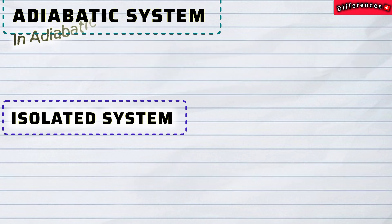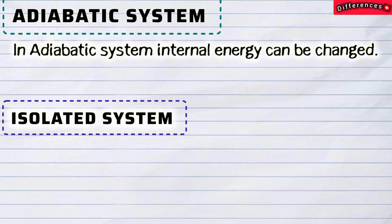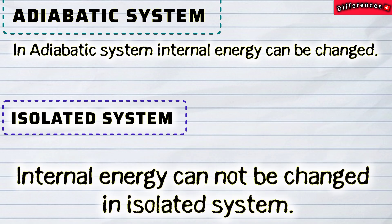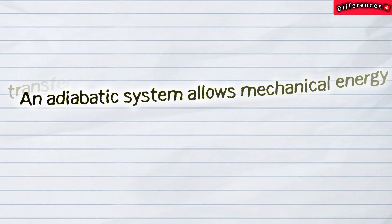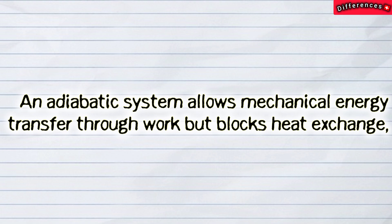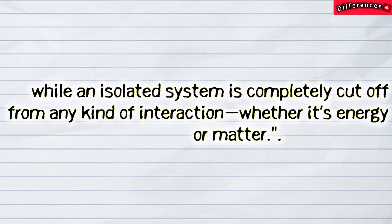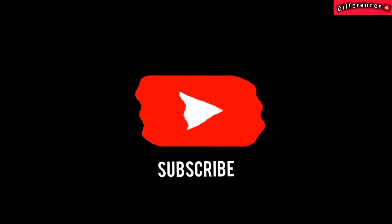So the main difference between the two: an adiabatic system allows mechanical energy transfer through work but blocks heat exchange, while an isolated system is completely cut off from any kind of interaction, whether it's energy or matter.